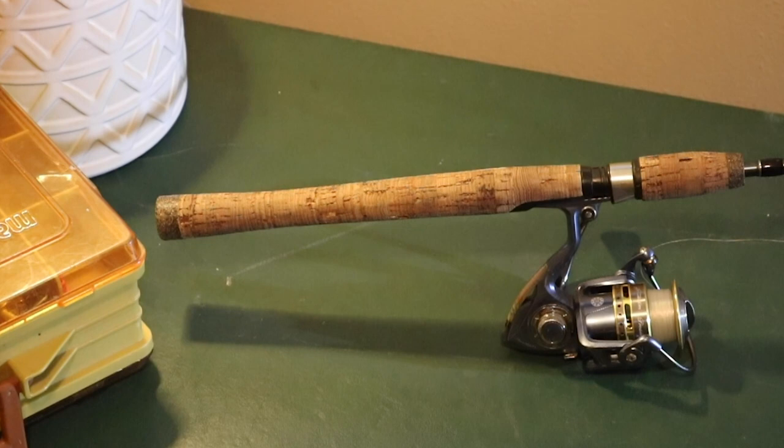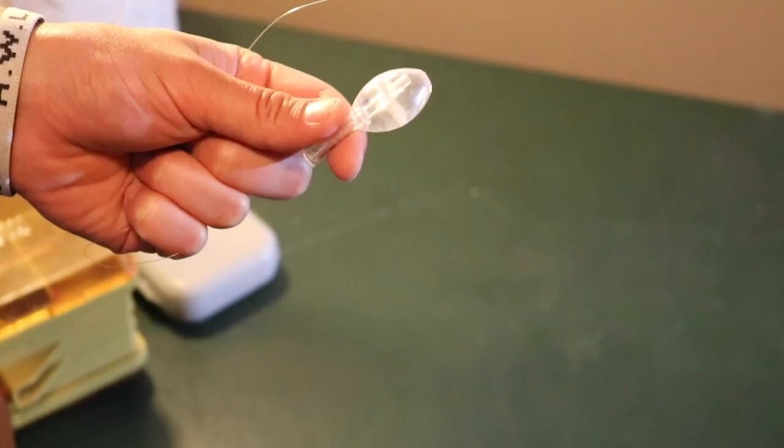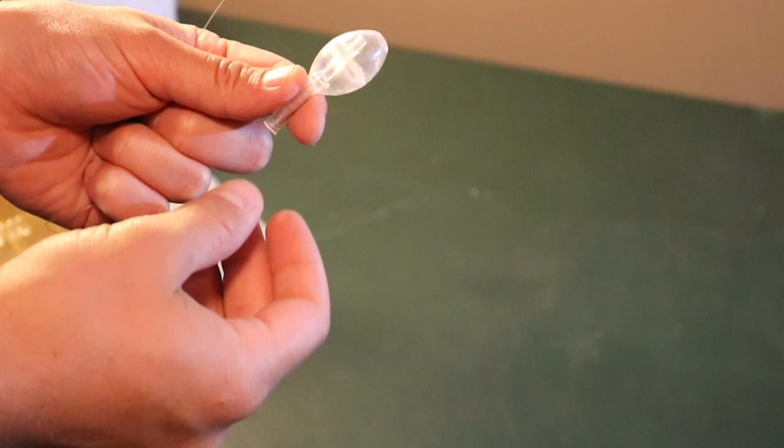So you're going to need a clear plastic bobber. I like these because you can fill them up with water, and then you can close the hole and you have a lot more weight to cast with, so you can cast pretty far with these. You'll go ahead and just stick your line through this hole there, pull it out the other side.